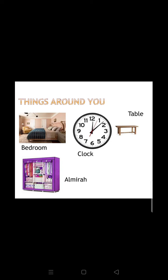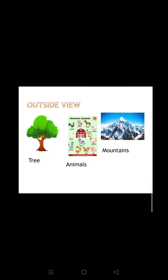Now kids, I want to ask you one question. As soon as you get up from your bed you observe many things around you — like a table, chair, bed, watch. As you can see in this picture: the bedroom, almirah, clock, and many things. When you move outside, the environment around you also has so many things like trees, mountains, animals, maybe a park outside your house.